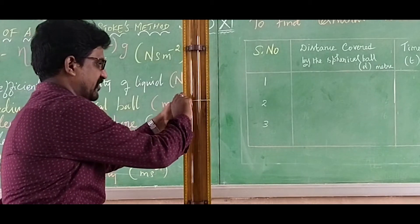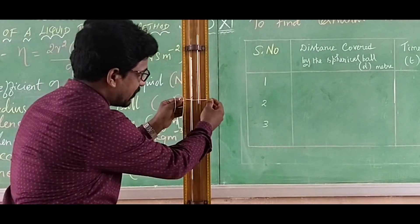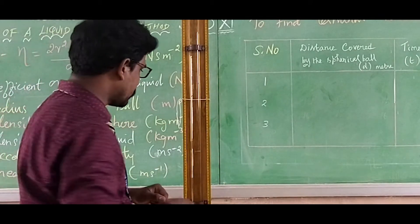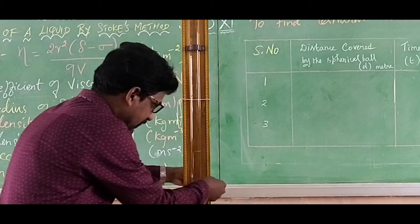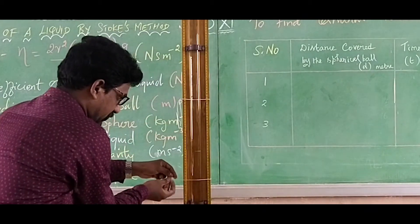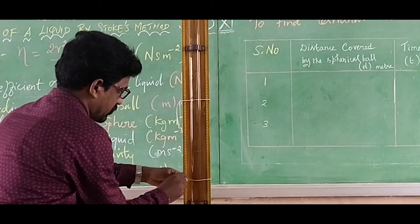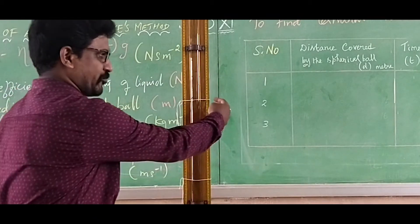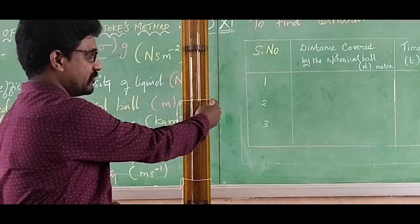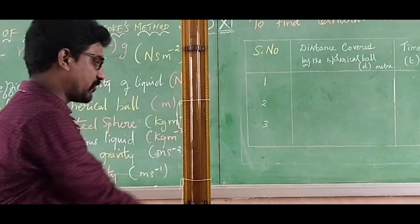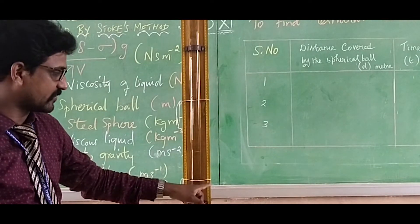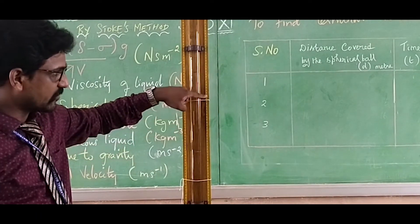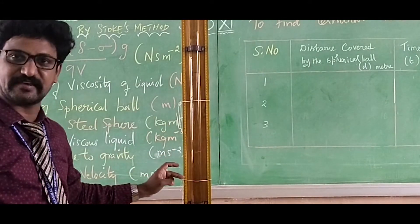Using a thread, a reference point A is marked at 40 centimeters along the long glass jar where the metallic sphere attains terminal velocity. Then another thread marks reference point B at 70 centimeters. The distance between these two reference points A and B is used to calculate the terminal velocity, which is 70 minus 40 equals 30 centimeters.